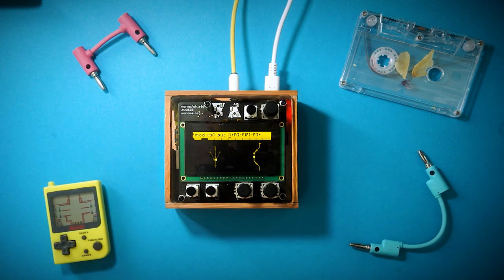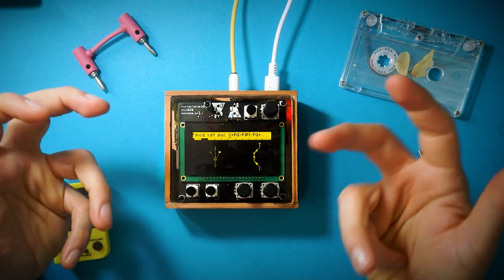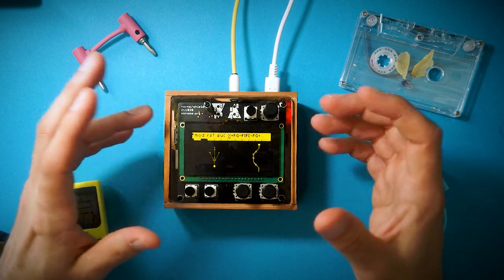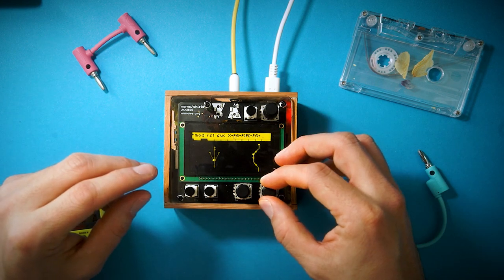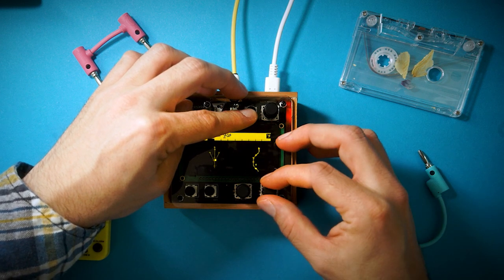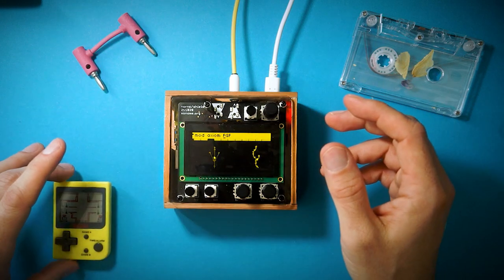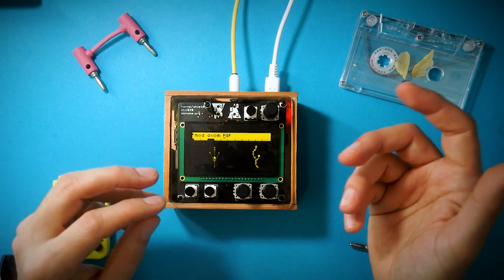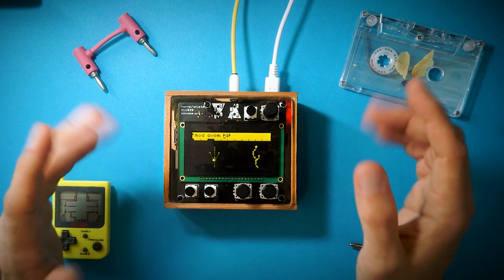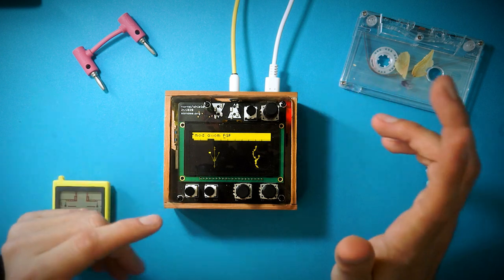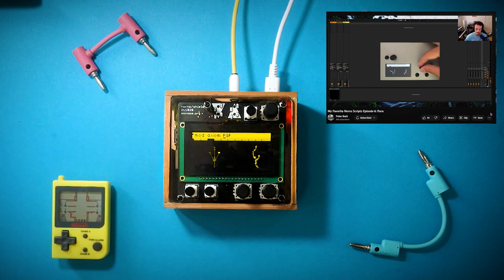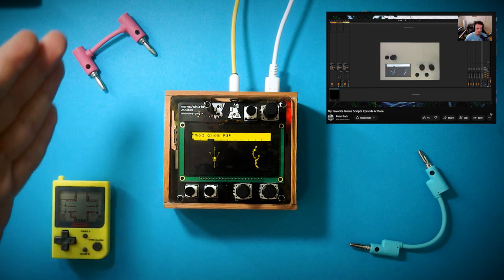So with this you can find pretty good different and interesting patterns just by moving a few knobs. Now like I said if you want to fully grasp Flora check the documentation or even check a video Peter Bark goes into a deeper dive of what the script does.